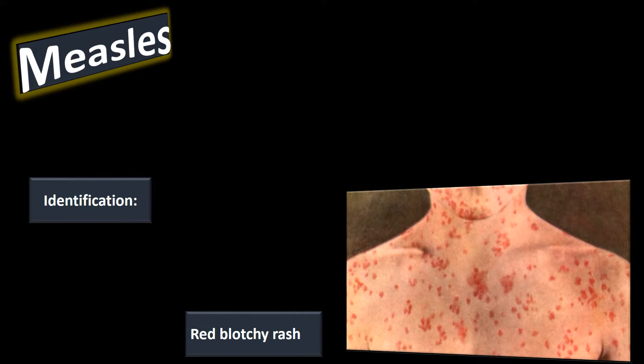We're also going to see leukopenia in these patients, meaning they'll have a low white blood cell count. Measles is more severe in our infants and our adults than it is in older children, but infants are particularly at risk when they contract this disease.